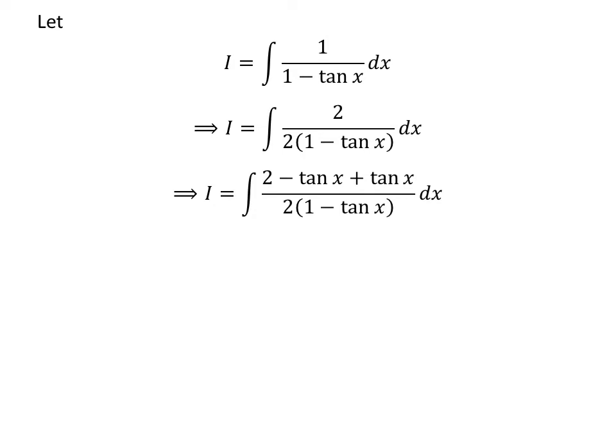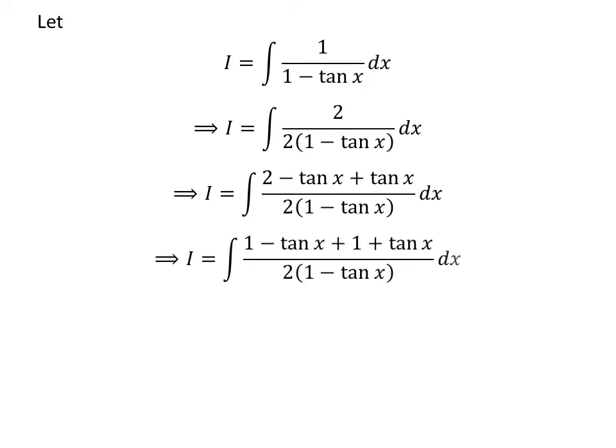Let us subtract and add tangent of x to the numerator of the above integrand. The numerator can be expressed as 1 minus tangent of x plus 1 plus tangent of x. So i is equal to integral of 1 minus tangent of x plus 1 plus tangent of x upon 2 times 1 minus tangent of x with respect to x.